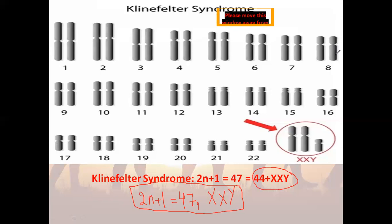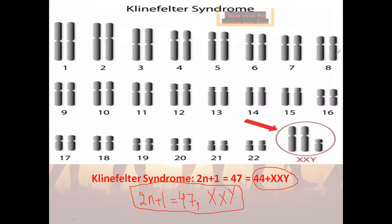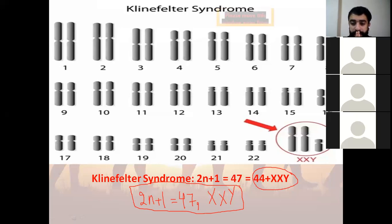Is this person fertile or sterile? He cannot give birth. Why? Because the abnormality is in the gonosomes. Whenever the abnormality is in the gonosomes, the individual is mostly sterile — there is a problem in giving birth or having babies.